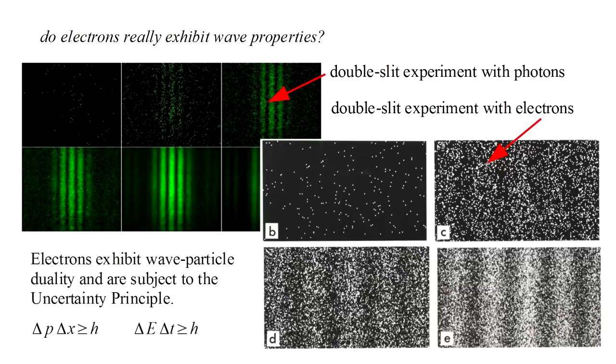From wave-particle duality, it immediately follows that electrons, like photons, must be subject to the uncertainty principle. Therefore, we see that the Bohr model's picture of an electron at a specific place in an orbit moving with a specific momentum cannot be correct. If we want to unlock the secrets of the atom, we are going to need to move even farther away from classical concepts.